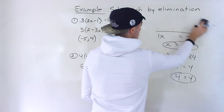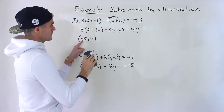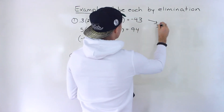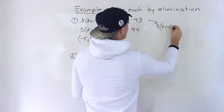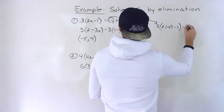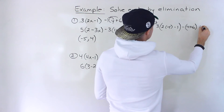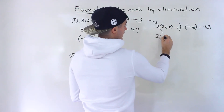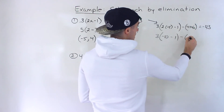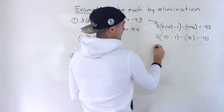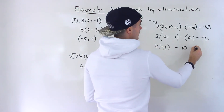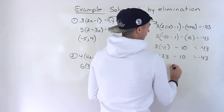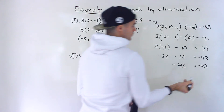Now if you want to check your answers, what you got to do is just plug in this x and y value to both equations and make sure the left side equals the right side. So we'll have 3 bracket 2 times negative 5 minus 1, minus y plus 6 — so we'll have 4 plus 6. That has to equal negative 43. So: 3 times negative 10 minus 1, minus 4 plus 6 is 10. This would be negative 11. 3 times negative 11 is negative 33. We indeed end up getting the left side equaling the right side.